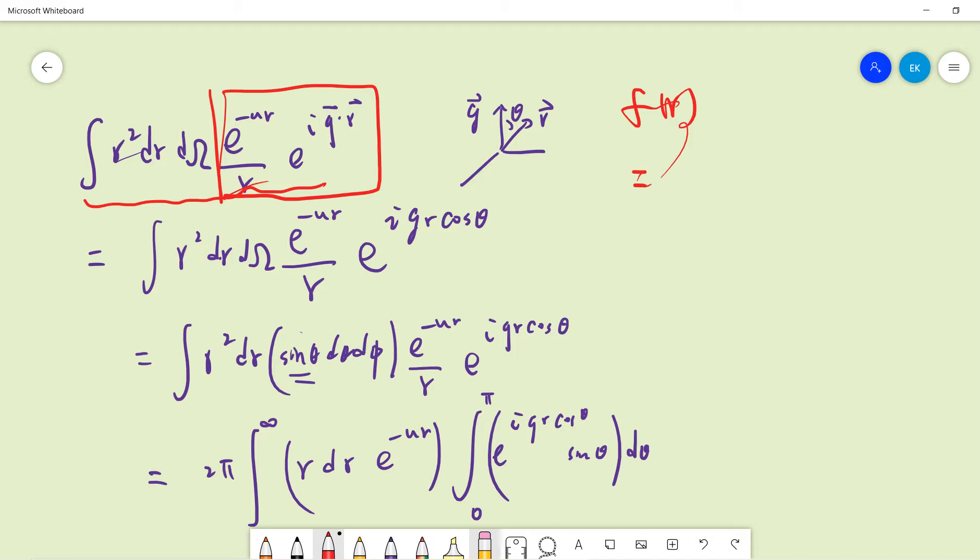You try to integrate with vector q·r. Usually, to make the computation easier, we make q along the z-axis, and r makes angle theta. We can change to spherical coordinates, so this term i·q·r becomes iqr cosine theta. Here q (no arrow) means the magnitude of the original vector.